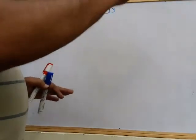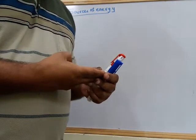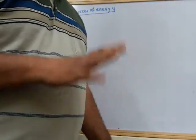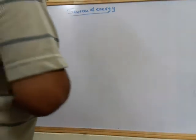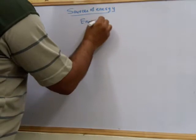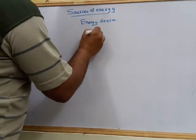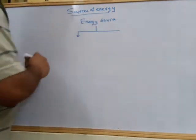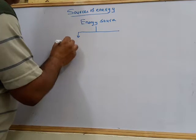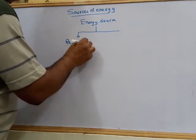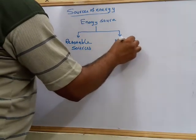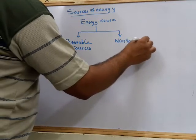So all these substances — coal, petroleum, wind energy, solar energy, hydrogen — are all sources of energy. Under sources of energy, we classify them into two broad categories. The first is known as renewable sources, and the second is known as non-renewable sources.